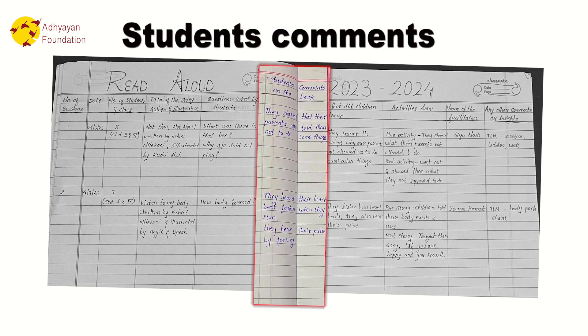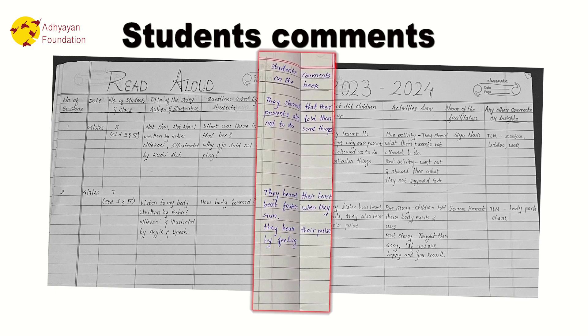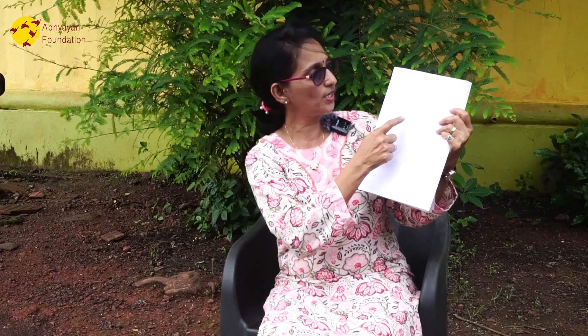The student comments section is a very important aspect, because children have their own imagination, observation, and experiences. If a story relates to them, they give comments freely. Those comments should be written here so you understand the progress of students — whether their engagement is good or needs improvement.